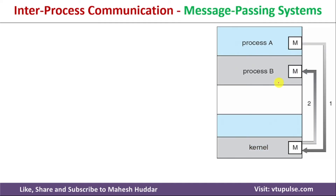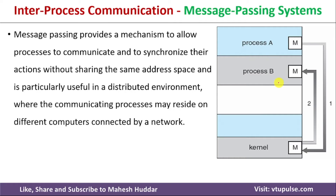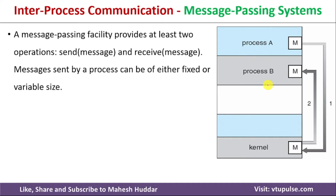The second type of inter-process communication is known as Message Passing System. In this case, Process A and B want to communicate with one another. They send the information to the kernel, and from the kernel the message is delivered to the destination. To implement Message Passing System in an Operating System, we need at least two operations: one is known as Send Message and the second one is known as Receive Message.